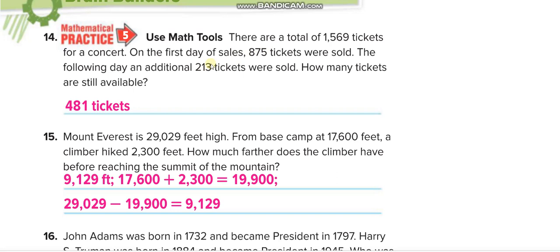Add these two: 875 plus 213. Five and three, eight. Seven and one, eight. Eight and two, ten. So 1,088 tickets sold.